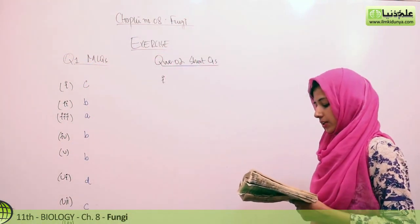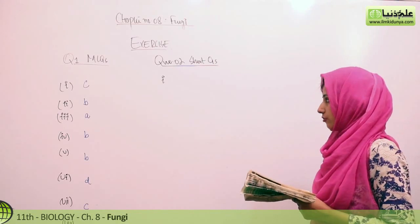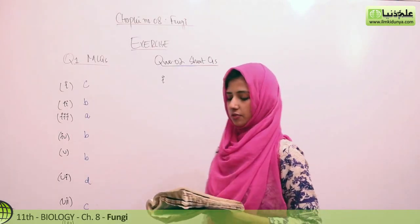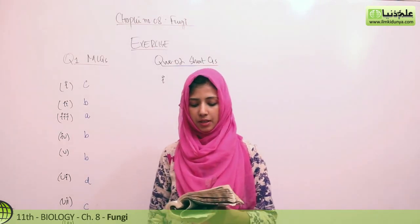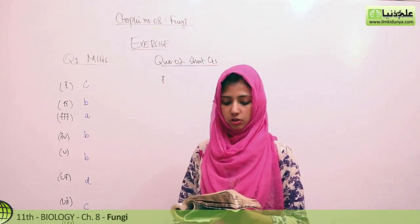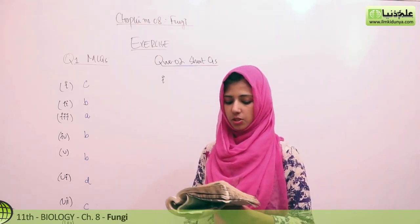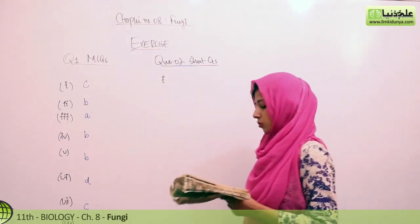Which statement about fungal nutrition is not true? It is actually option C. Facultative parasitic fungi can grow only on their specific host because specific host and substrate can grow. So option C will be the answer. Absorptive nutrition of fungi is aided by option B, their large surface area volume ratio.